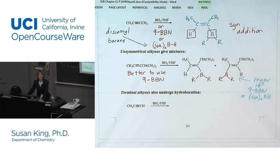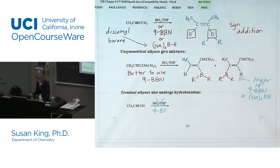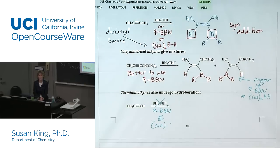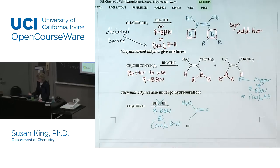Terminal alkynes also undergo hydroboration. BH₃·THF does not work very well for terminal alkynes — for terminal alkynes you really need to use disiamylborane or 9-BBN. The problem with BH₃ is that it tends to add twice, which causes all sorts of problems in the product you actually isolate. What we normally do is oxidize the hydroboration product with basic hydrogen peroxide.